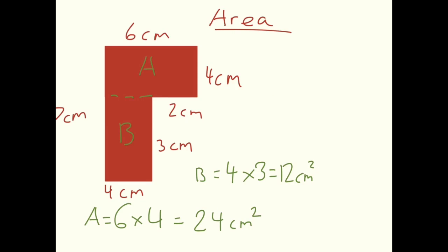Now that we have both the area of shape A and the area of shape B, we add both areas together to find the whole area. 24 centimeters squared plus 12 centimeters squared gives us 36 centimeters squared.